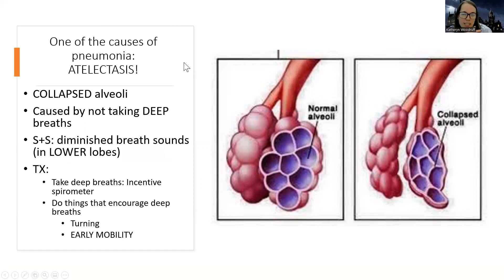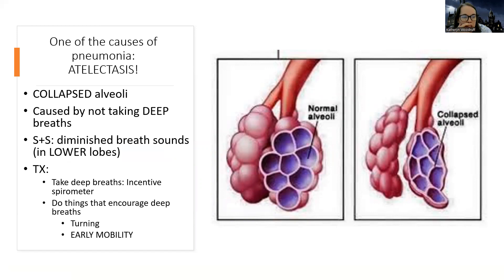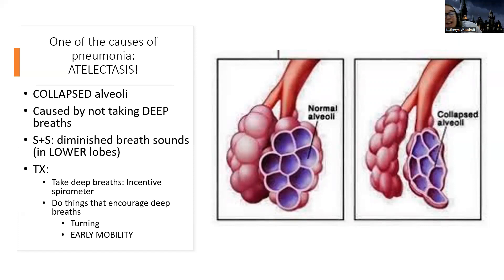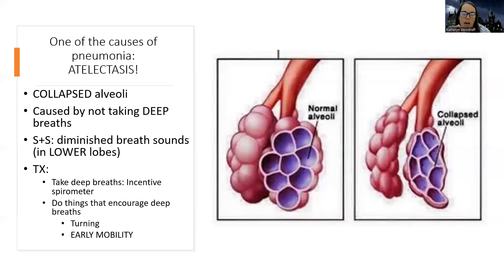One of the most common causes of pneumonia is atelectasis. When patients in the hospital aren't taking deep breaths — after surgery, with rib fractures — the alveoli collapse from disuse. You'll hear diminished breath sounds, usually in the lower lobes. Treatment is encouraging deep breaths with an incentive spirometer, turning every two hours, and early mobility. Prevention is key — atelectasis should always make you think pneumonia, since it's one of the first consequences.